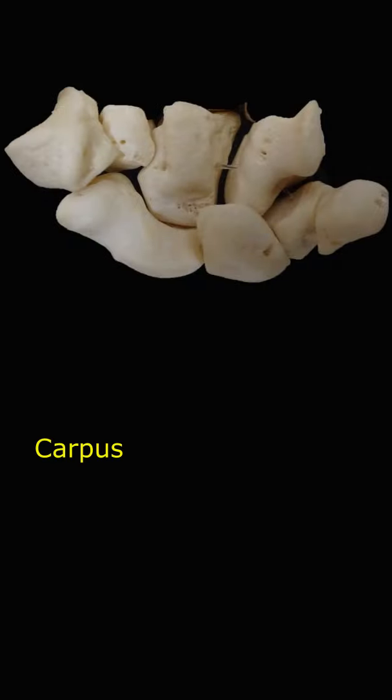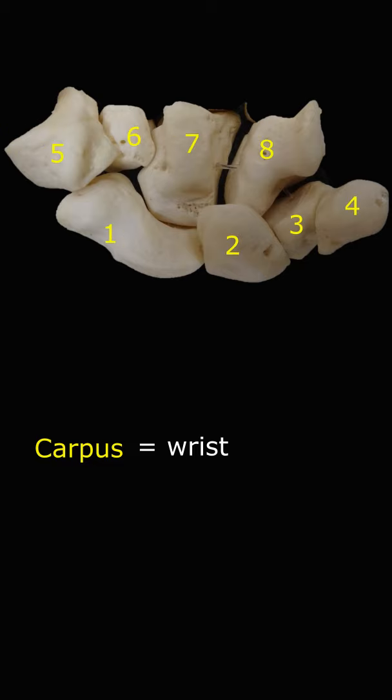Carpus in Latin means wrist and contains eight bones in two rows. They will be dealt with in another short video, which you can find on the channel.